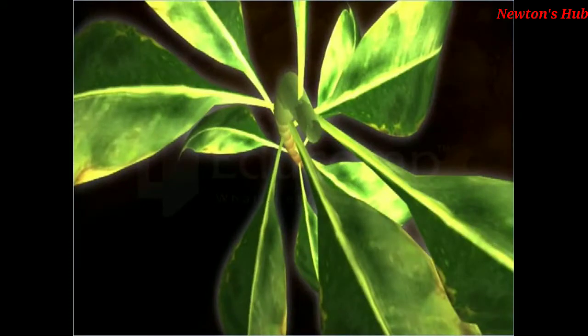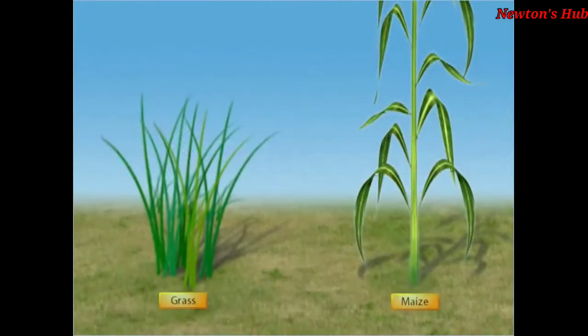In the leaves of some plants like grasses and maize, the petioles are absent. These leaves have long lamina.